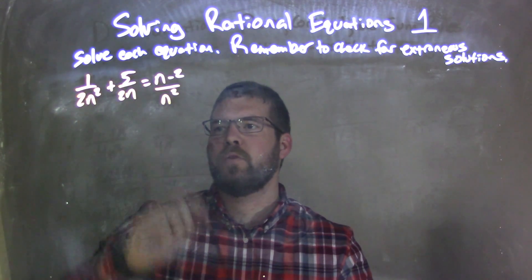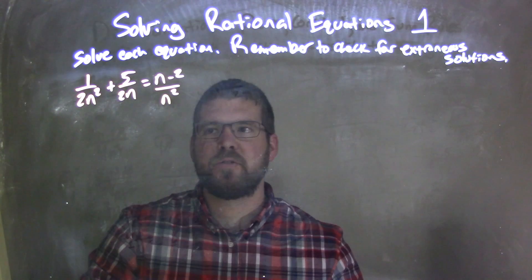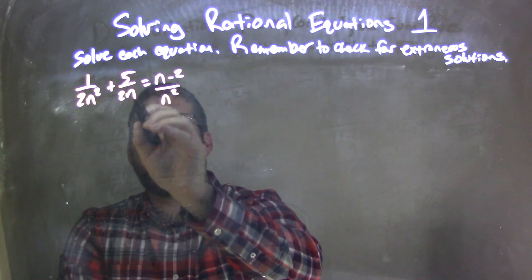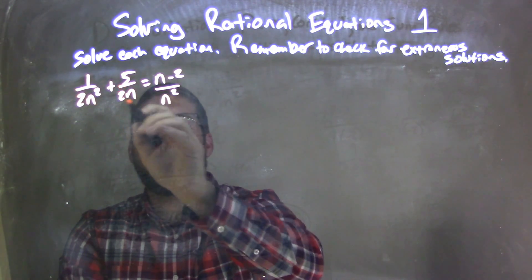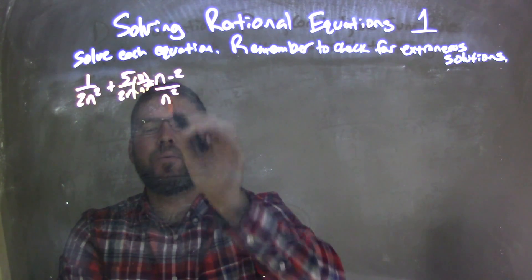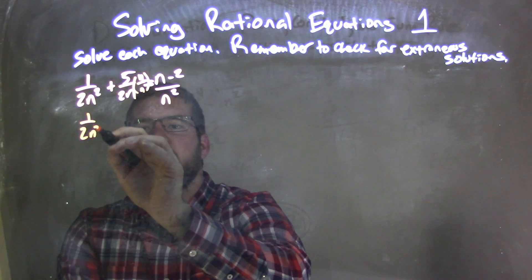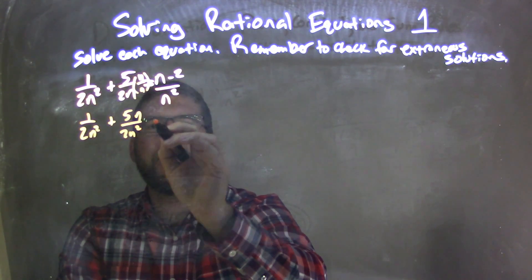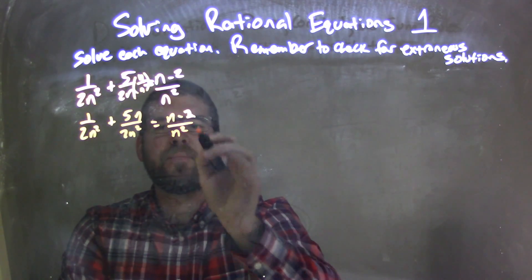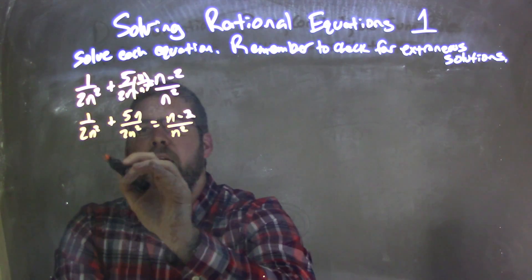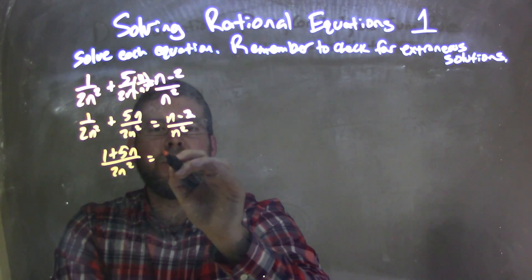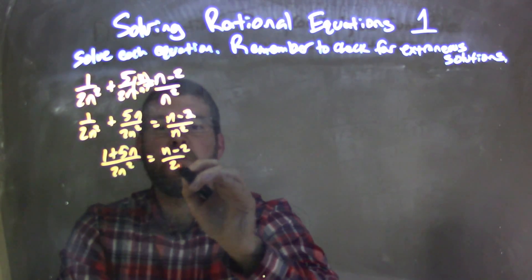What I see here is I want to combine these two fractions, but they don't have the same base. Since I don't have the same base, I need to rewrite 5 over 2n to have the same base. So I'm going to multiply it by n over n. And in doing so, I have 1 over 2n squared plus 5n over 2n squared, which is now equal to n minus 2 over n squared.